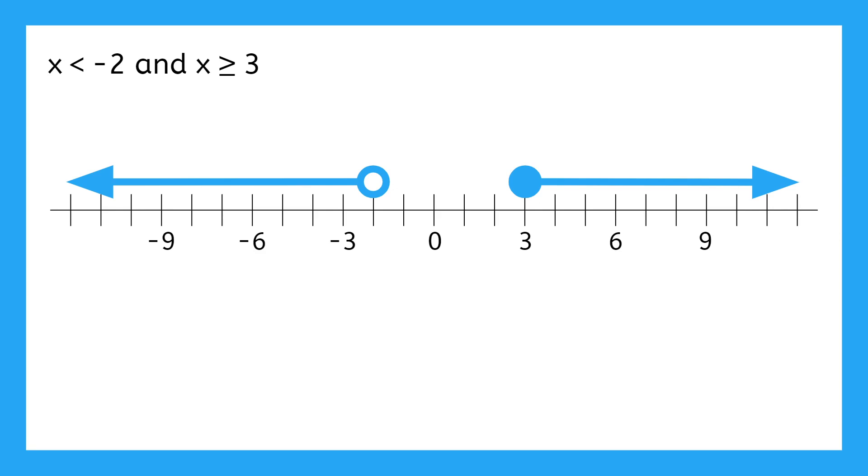Anyway, for AND, we need the overlap, which is where exactly? There isn't any, because there is no such thing as a number that is below negative 2 and above 3. If a number is below negative 2, it can't be above 3. And if a number is above 3, it can't be below negative 2. So, in this case, there is no solution.